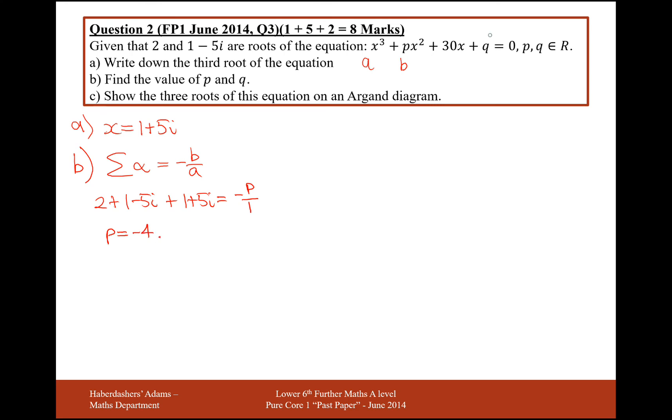For the last part, I need to multiply all of my roots together, alpha, beta and gamma, and this will give me minus d over a. This 30 here is c and this q here is d. So multiplying all of my roots together, 2 lots of 1 minus 5i times 1 plus 5i is going to equal minus q over 1.